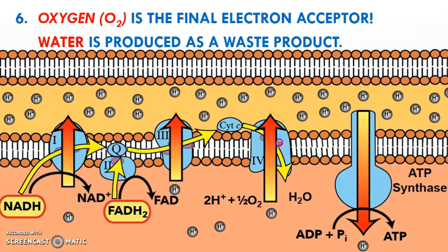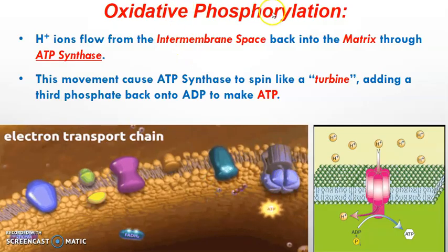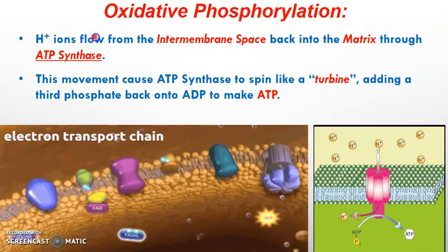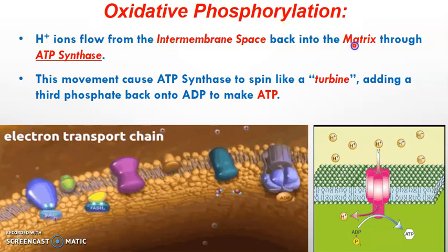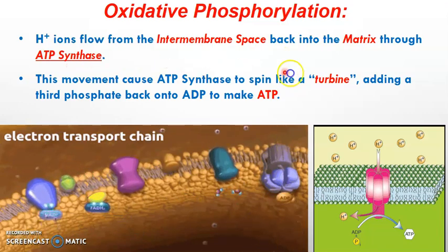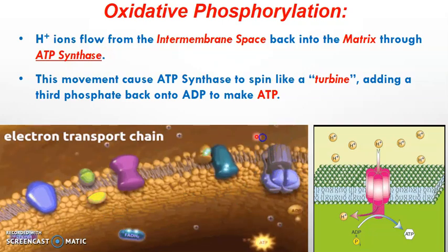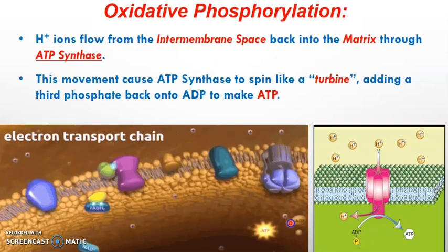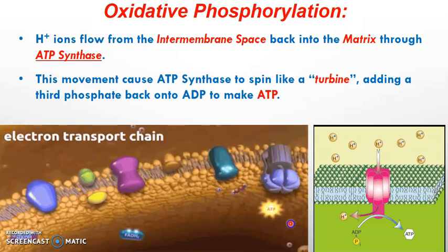This whole process is what we refer to as oxidative phosphorylation. The source of electrons moving through the chain did not come from light as they did in photophosphorylation — they came from NADH and FADH2, which in turn came from the slow, steady breakdown of glucose starting from glycolysis, followed by the prep step, and then the Krebs cycle. Oxidative phosphorylation is when the flow of hydrogen ions from the intermembrane space back into the matrix occurs through ATP synthase, causing it to spin like a turbine and produce ATP.